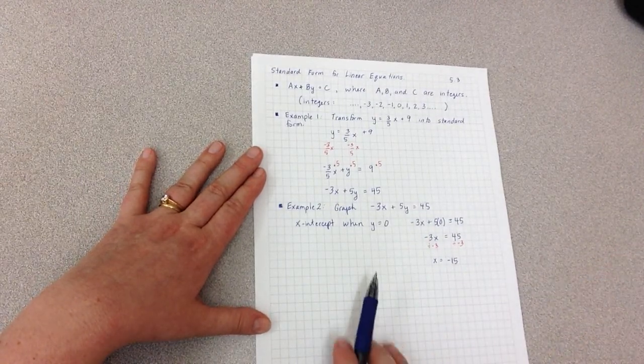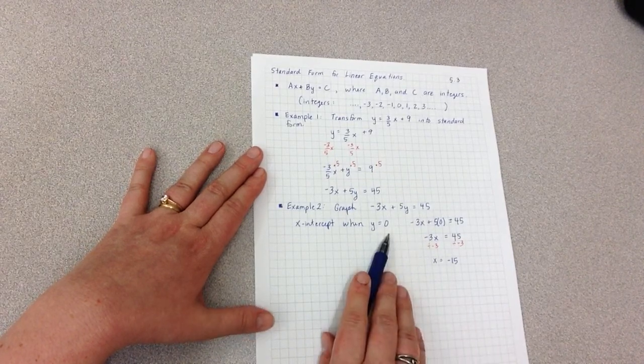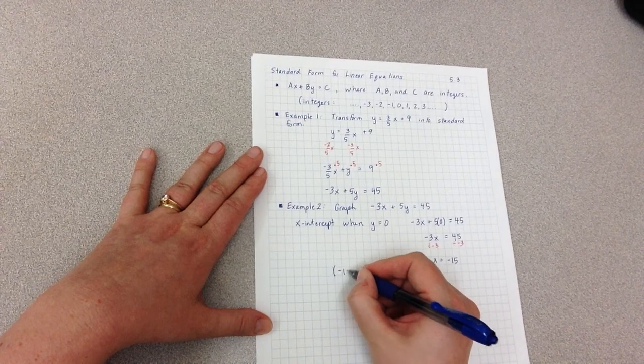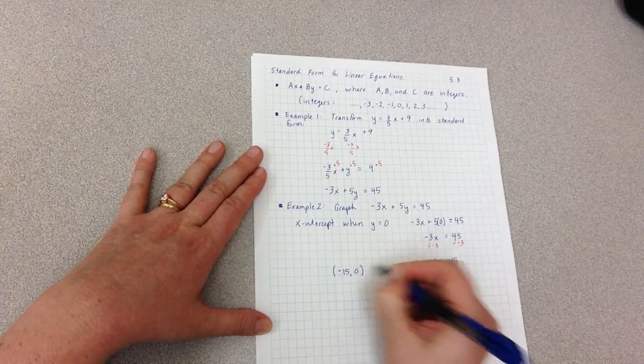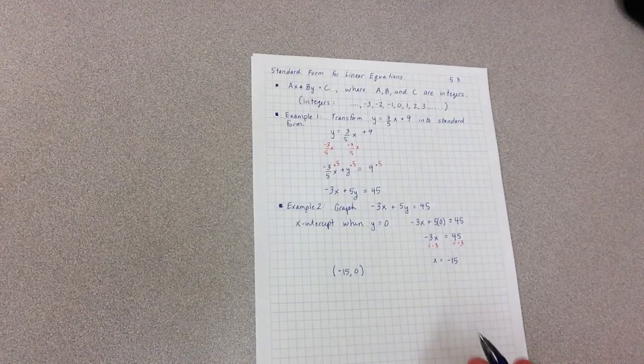Now the most common mistake that people make here at this point is to not recognize that I actually have an x and a y value, meaning I actually have the point negative 15 comma 0 to graph. So this gives me my x-intercept.